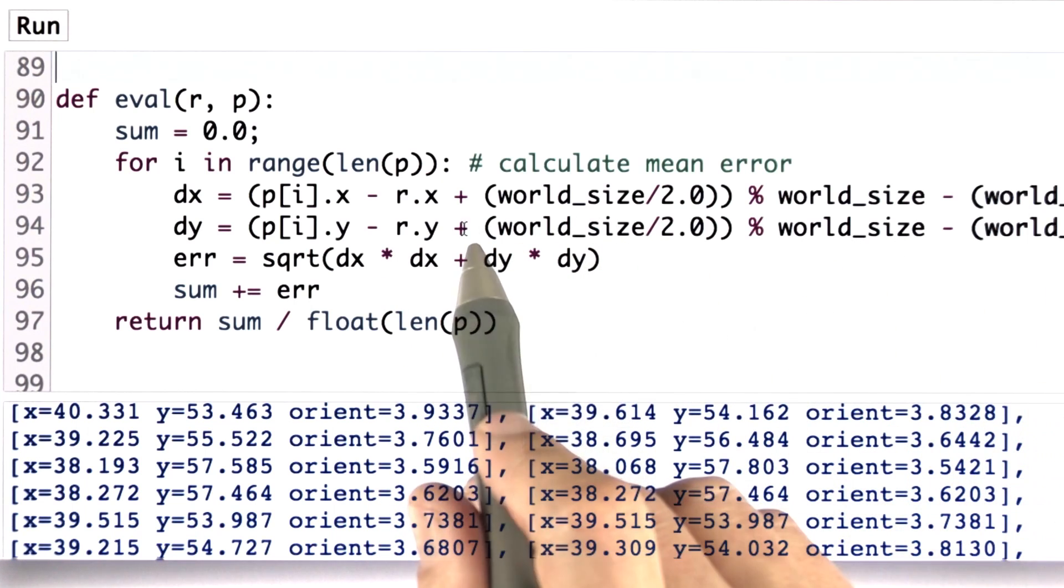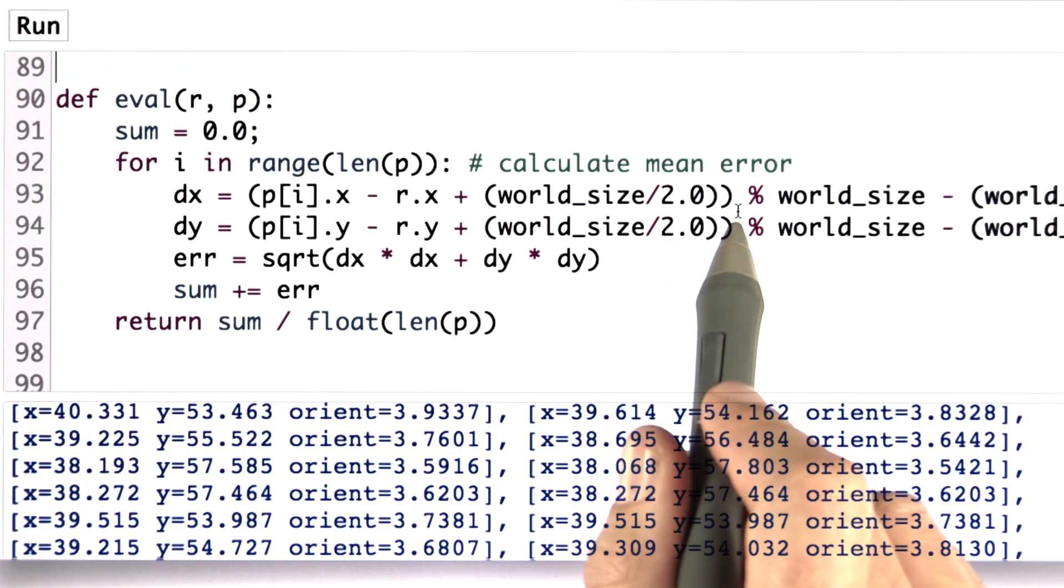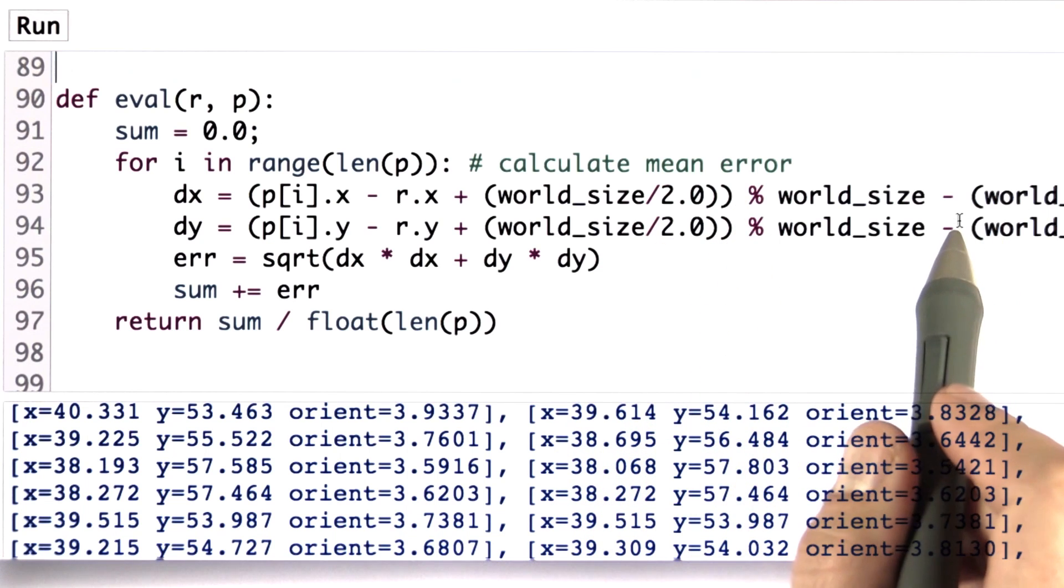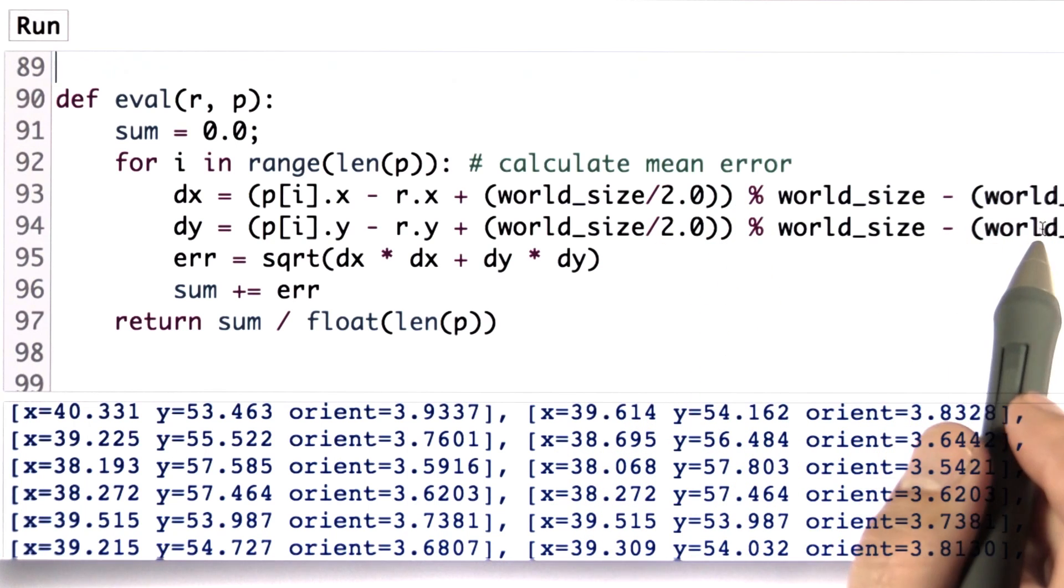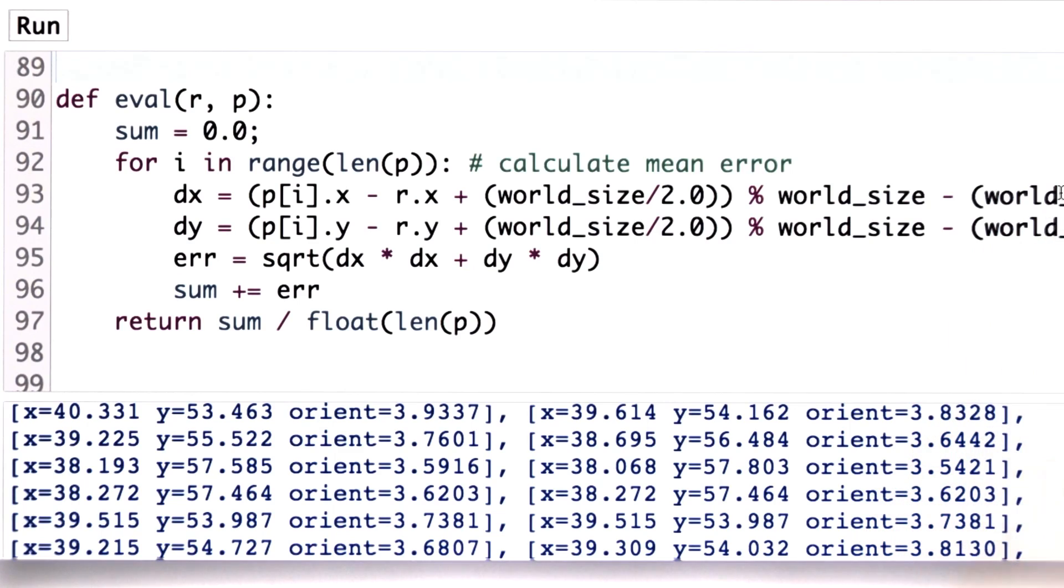You might parse this. I'm adding world size over to then compute a modulo operation, and then subtract the same thing. You can't even see it. It's just too long a line.